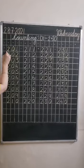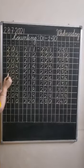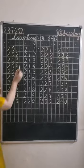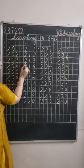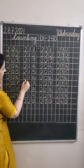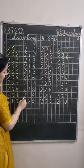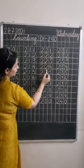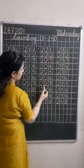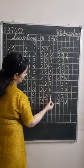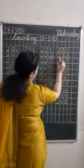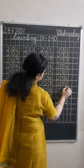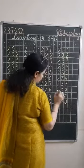Let's revise our counting, humnay 240 tak kounting kareenge hain. Repeat after me: 201, 202, 203, 204, 205, 206, 207, 208, 209, 210. This is 211, 212, 213, 214, 215, 216, 217, 218, 219, 220. Then 221, 222, 223, 224, 225, 226, 227, 228, 229, 230. Then 231, 232, 233, 234, 235, 236, 237, 238, 239, 240.